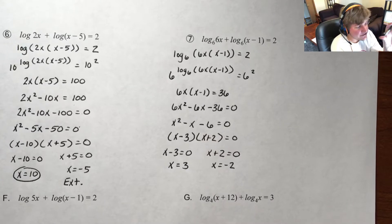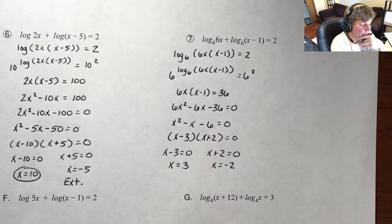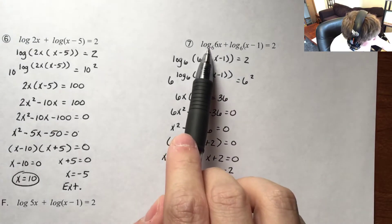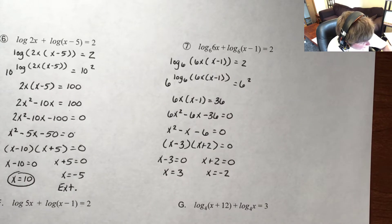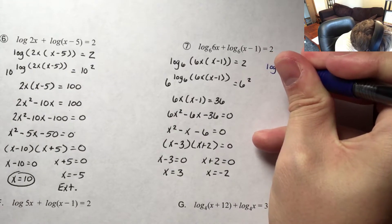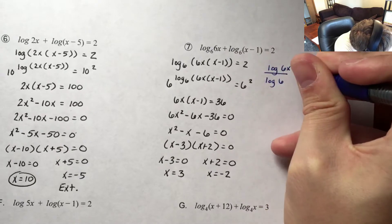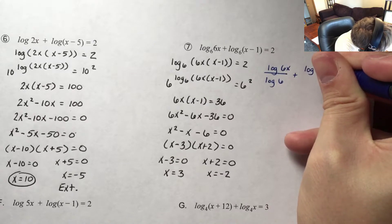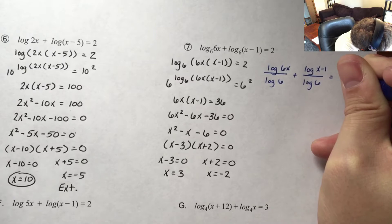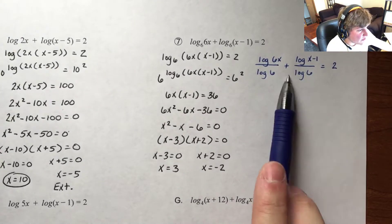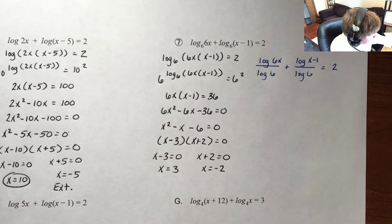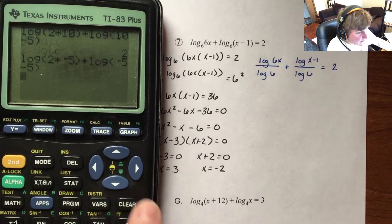The only thing that's going to throw you through a loop on these problems is that the base is 6, so it's tougher to put into the calculator. I have to use the change of base formula for each of these terms. So I rewrite the problem: log base 10 of 6x over log base 10 of 6, plus log base 10 of x minus 1 over log base 10 of 6, all equal to 2. It will just require some extra steps but nothing too rigorous.